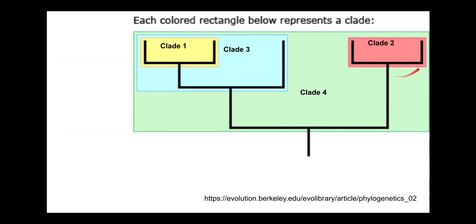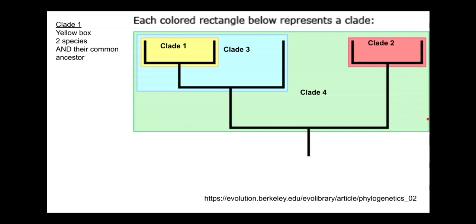They share that node, they share that common ancestor. We also have a clade with three taxa — that tip, that tip, that tip — they all originate or can be traced back to that node. All three of these tips, all three of these taxa, have this common ancestor represented by that node. We also have a fourth clade with one, two, three, four, five taxa in it. The clade always has to include the node — these boxes always include the node they originate from.